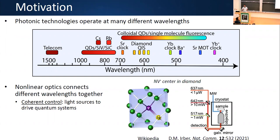Nonlinear optics is a very natural way that we can think about connecting these different wavelengths together. One of the things we're interested in is using nonlinear optics to generate the coherent light needed to drive these quantum systems, in some cases at multiple wavelengths. If you think about atomic clocks, many times you need several different wavelengths to prepare and read out the system, and the same can be true for different types of quantum sensors.